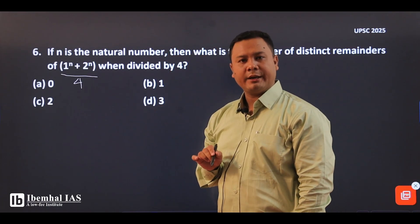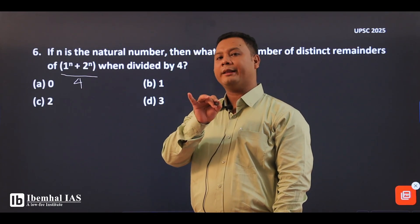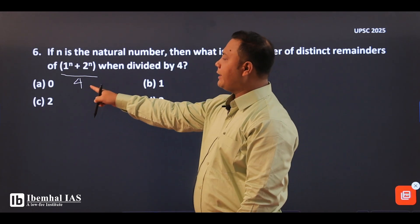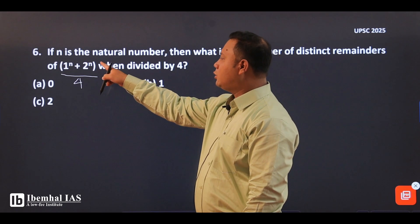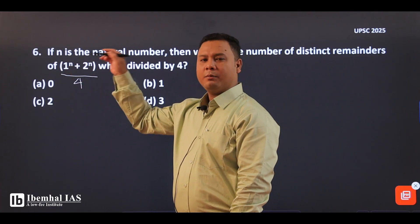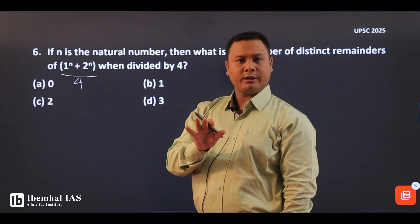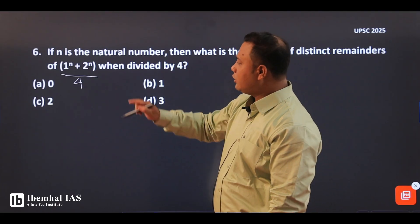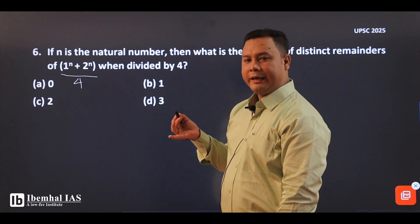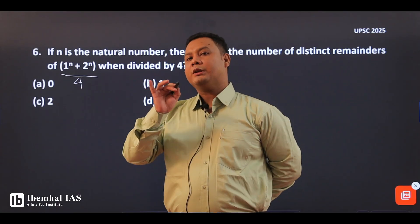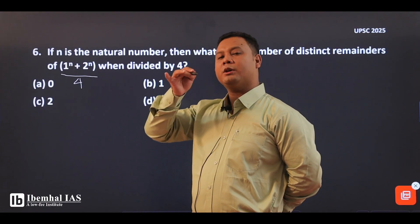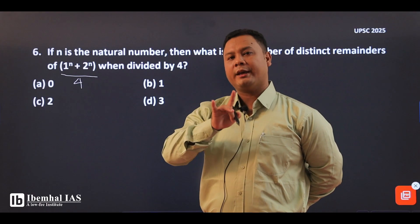You need to find the number of distinct remainders, starting from 1. If you have 2 to the power of n, you can see: 2 to the power of 1, then 4 squared, 2 cubed, and 2 to the power of 1 again.